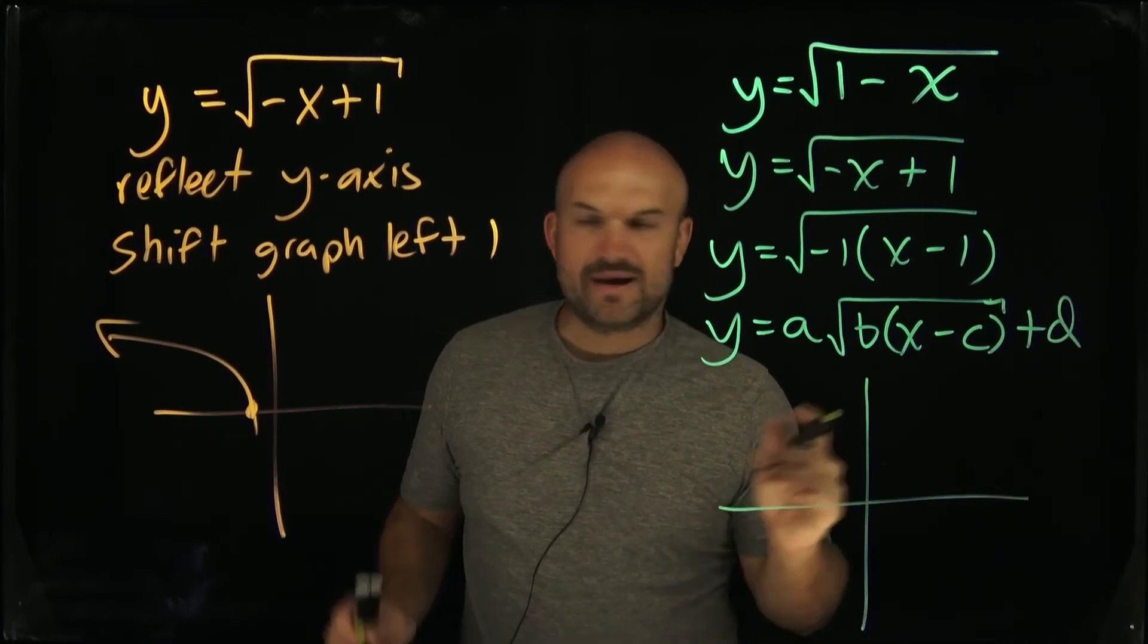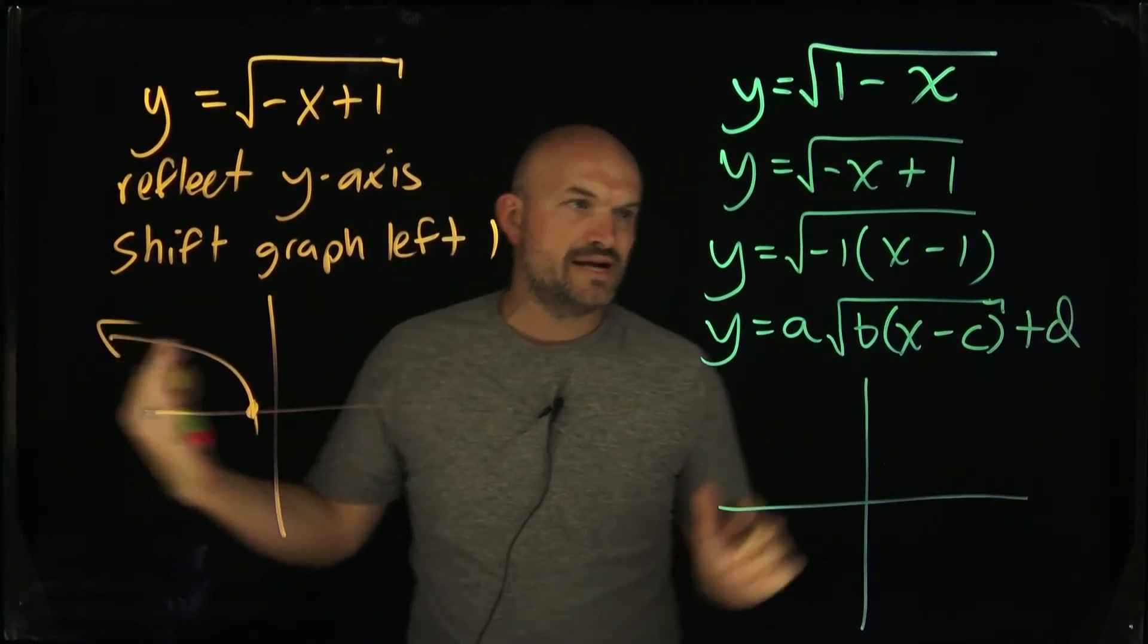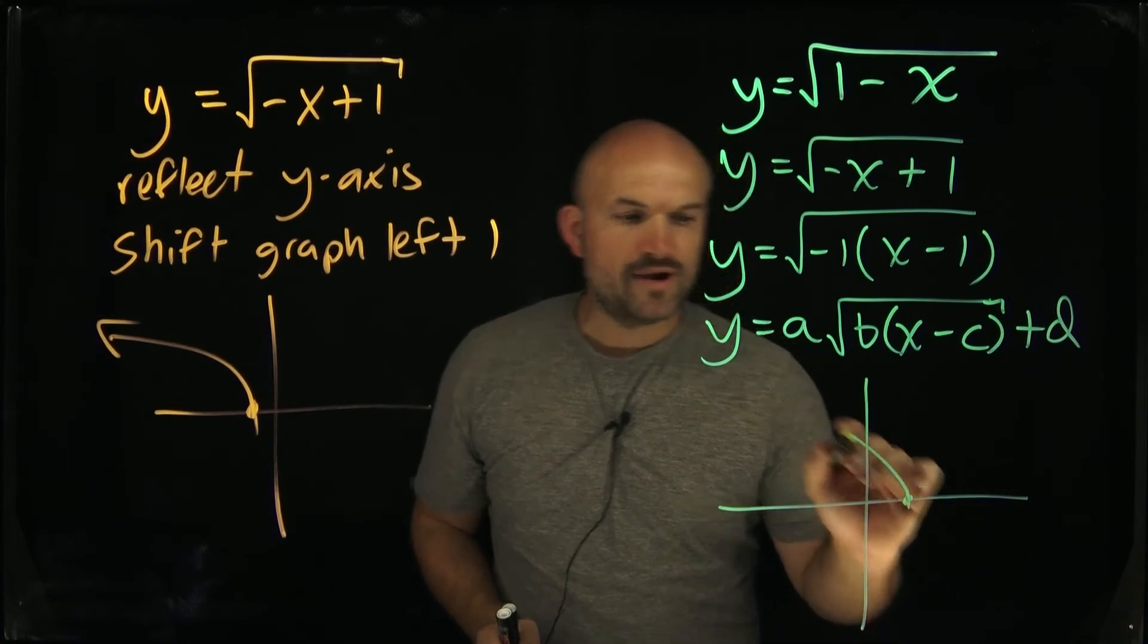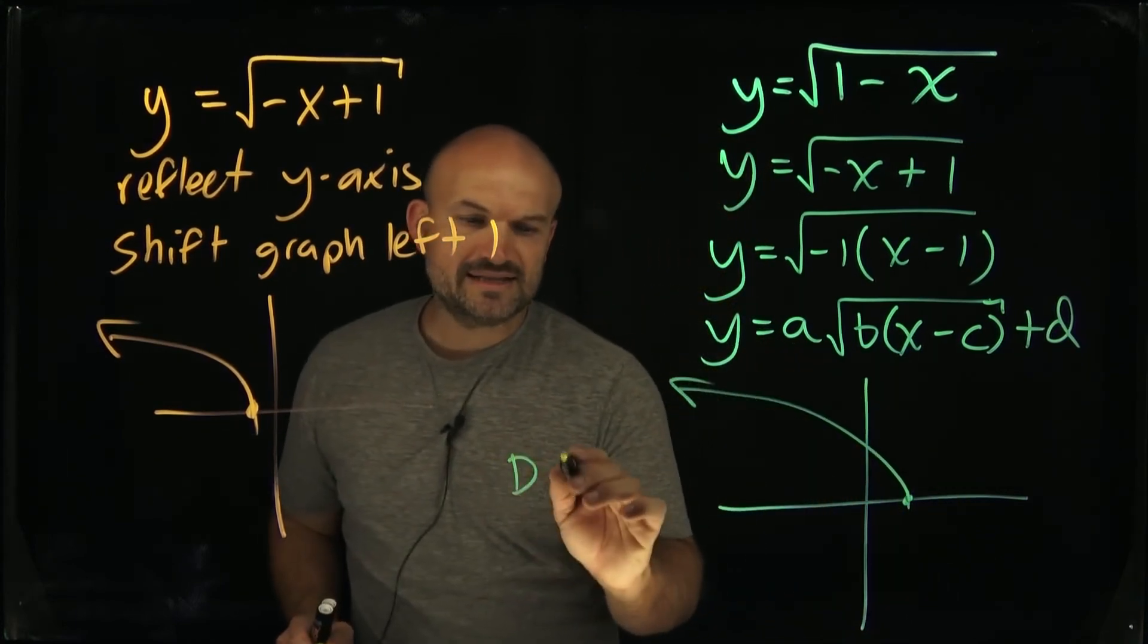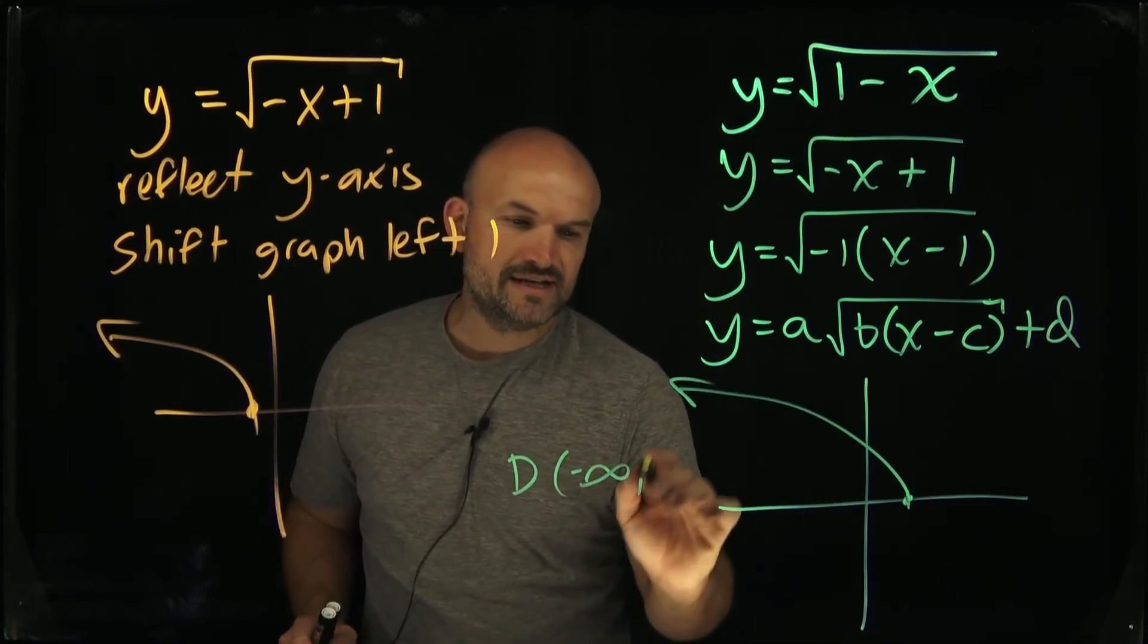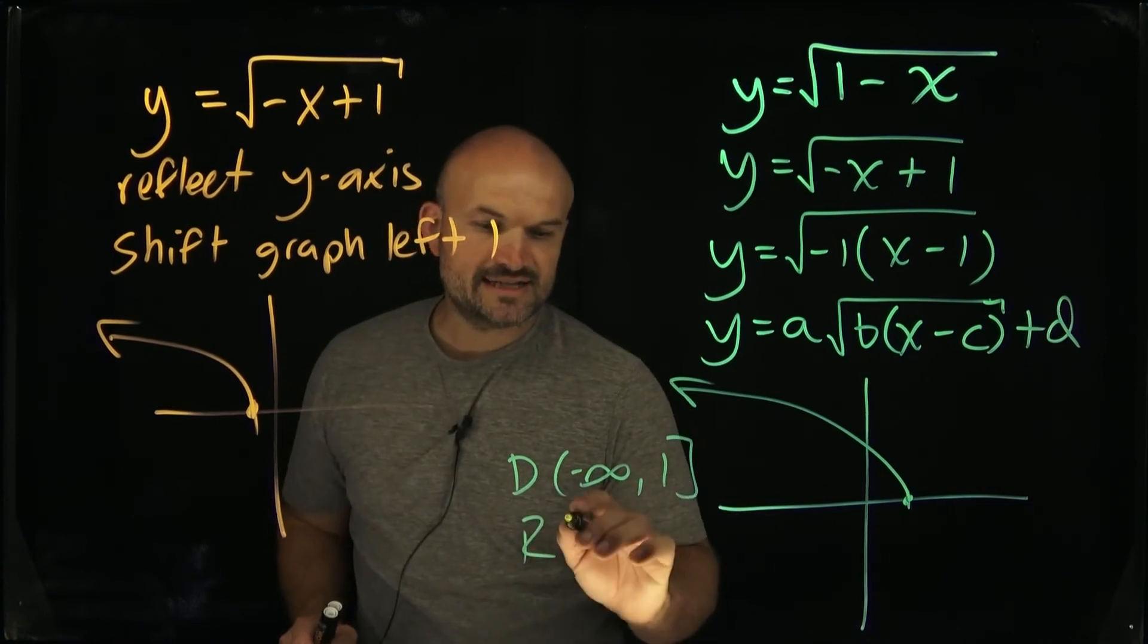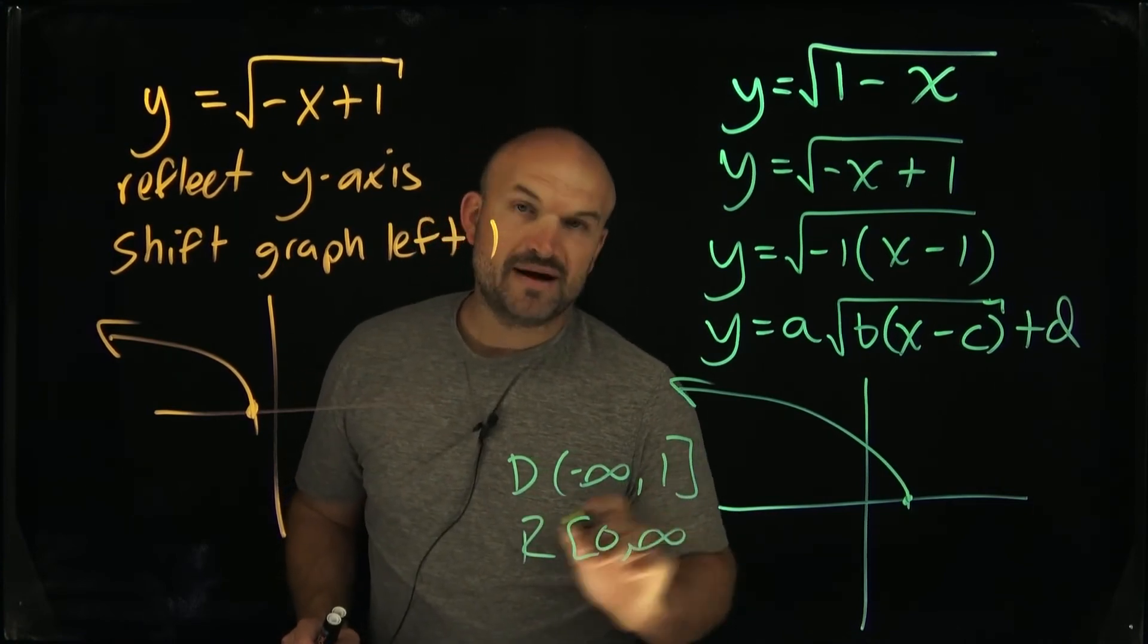Let's go and take a look at what this graph looks like. So we have a reflection about the y-axis. That is correct, but it's actually going to be shifting right one. So therefore my domain in this case is going to be from negative infinity to positive one. And my range in this case is going to be from zero to positive infinity.